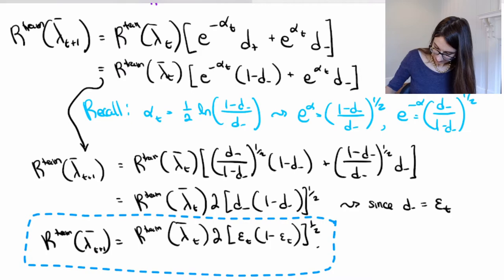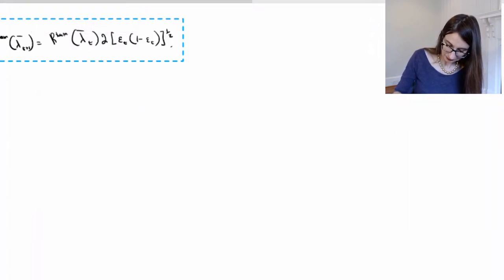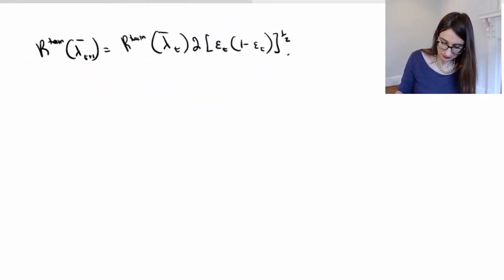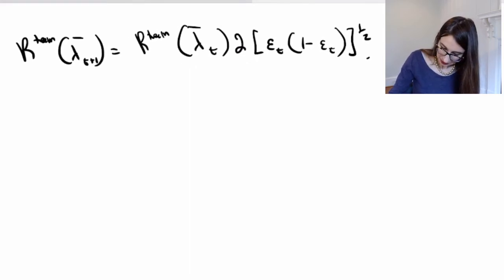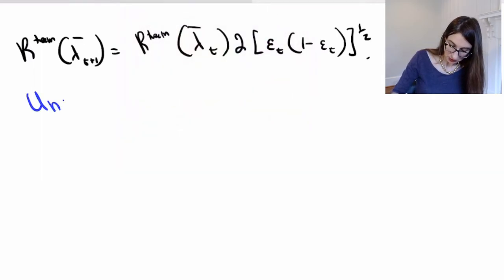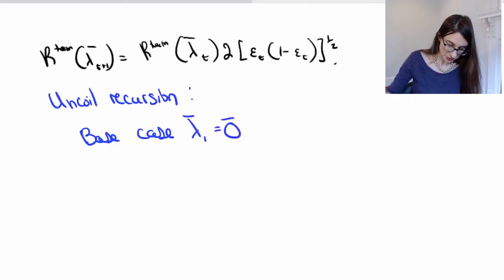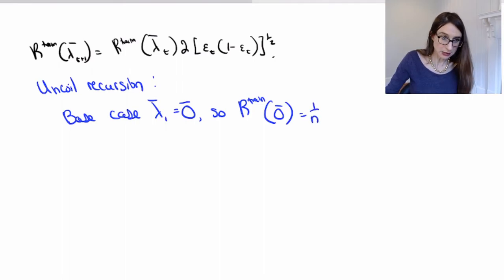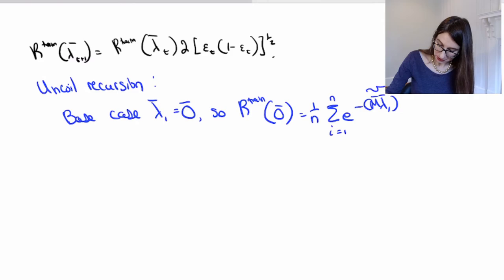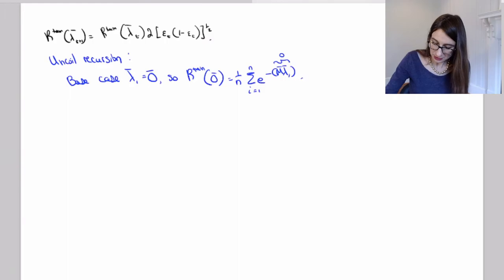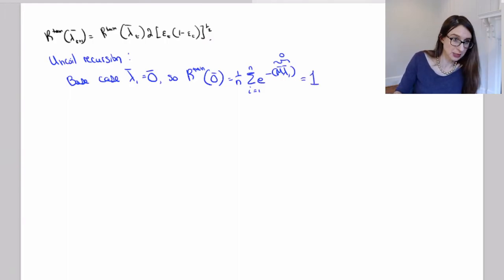Now let's unravel our recursion. The base case is where the coefficients are equal to zero at the first iteration. In that case, the exponential loss is (1/n) times sum from i=1 to n of e to the negative 0, and since I have n terms, this whole thing equals 1. So the base case is done.